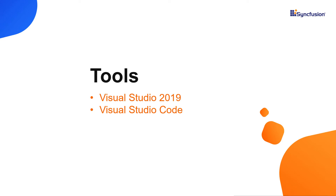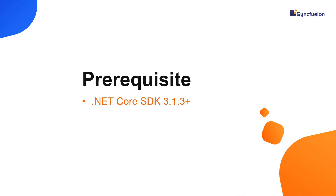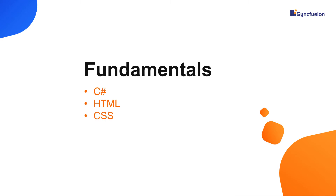You can create a Blazor application using either Visual Studio 2019 or Visual Studio Code. In this video, I will create a Blazor WebAssembly application using Visual Studio 2019. I have installed .NET Core SDK 3.1.3. To follow along, one should have a basic understanding of C#, HTML, and CSS. You can also watch a descriptive video on Blazor and Syncfusion Controls titled 'Create a Blazor WebAssembly app and add Syncfusion Blazor components', which I have shared in the YouTube card.